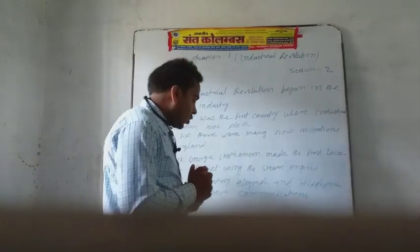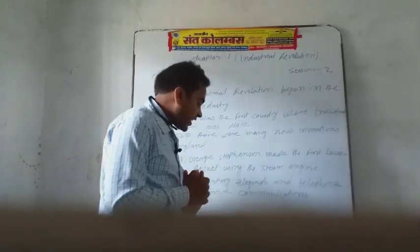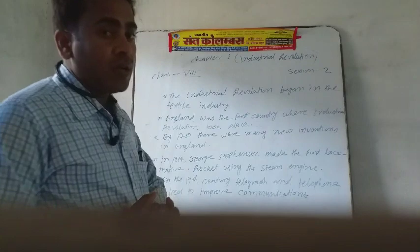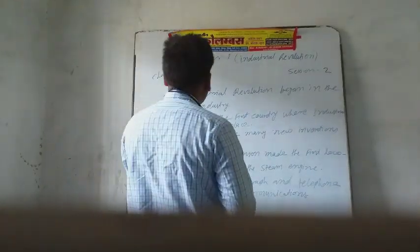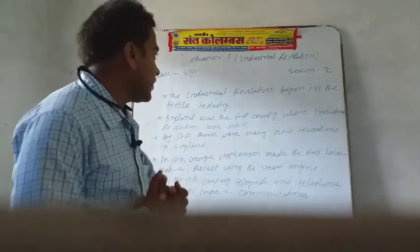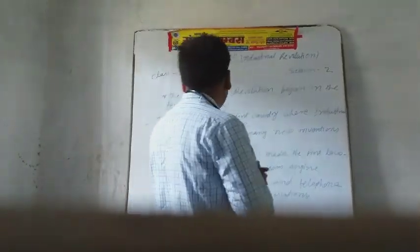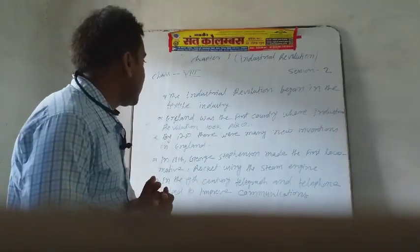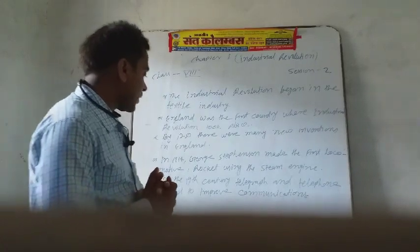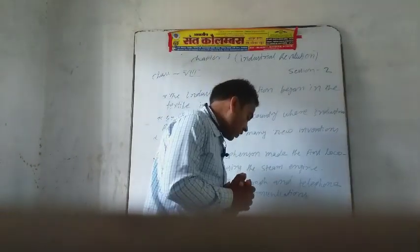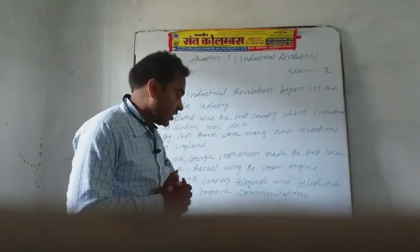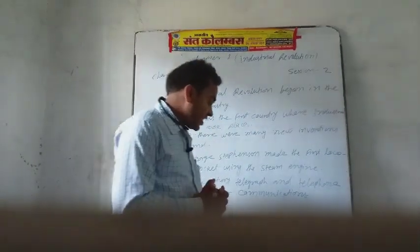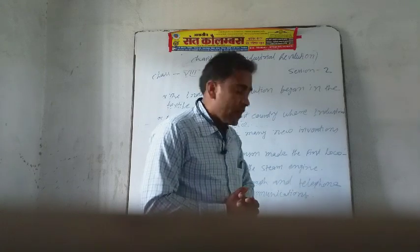As demand for goods grew, local goods couldn't satisfy the needs of people. England was the first country where the industrial revolution took place, and it began in the textile industry. Goods produced by hand in small quantities were soon outnumbered by machine-made goods manufactured at a rapid pace.